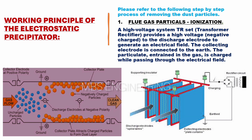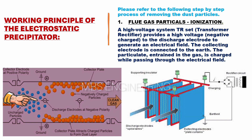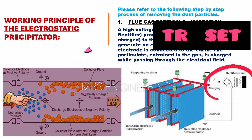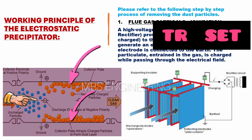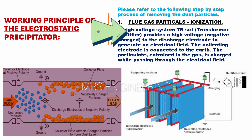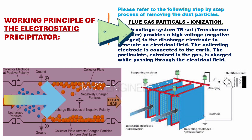The first step of the electrostatic precipitator's working principle is the ionization of the dust particles. Discharge electrodes are placed in between the collecting electrodes, and then connected to the high voltage TR set, or transformer rectifier, which provides a high voltage, negatively charged supply to the discharge electrode to generate an electrical field. The collecting electrode is connected to earth. The particulate entrained in the gas is charged while passing through the electrical field.